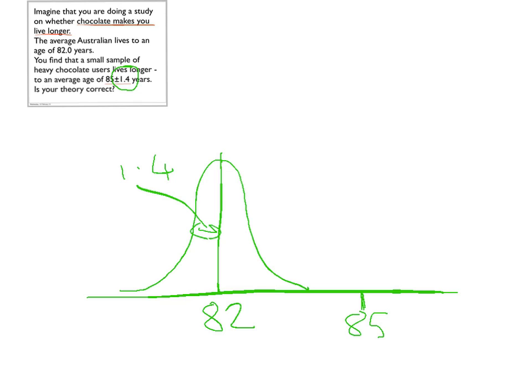So now we can ask, if the null hypothesis were true and had an uncertainty of 1.4, what are the odds that we'd see a value up here at 85? So in this case, the odds of seeing a value of at least 85 is the integral of this part of the Gaussian.